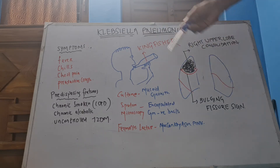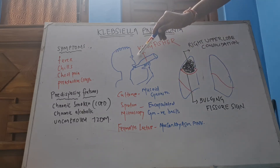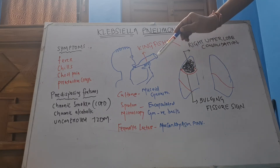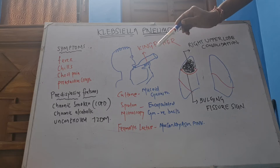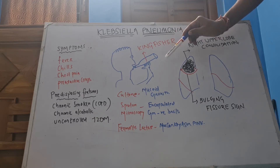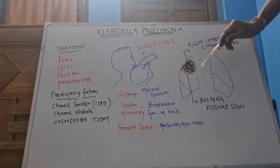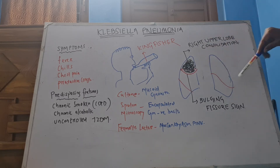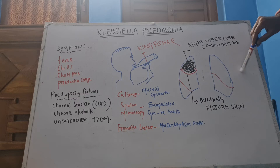Alcoholic and unconscious patients — elderly alcoholic patients — won't be conscious, and these secretions will be aspirated into the trachea and then into the upper lobe. That is why right upper lobe pneumonia happens in Klebsiella.